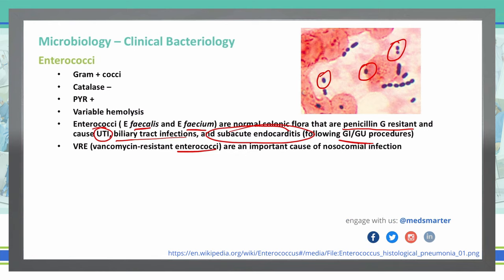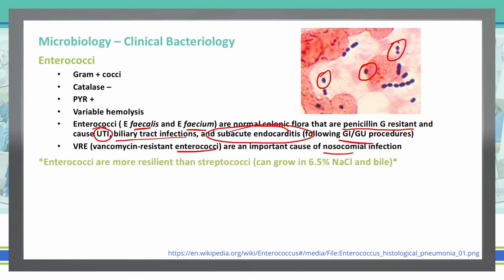We do see VRE quite often as a nosocomial infection that you can get in hospital settings. Because of that resistance to vancomycin, Enterococci are more resilient than Streptococci. They can grow in a 6.5% sodium chloride and bile solution, which is important to know and something they can test you on on the USMLE.